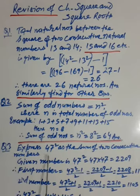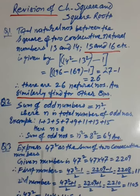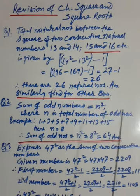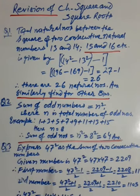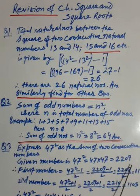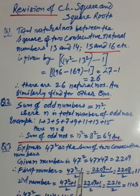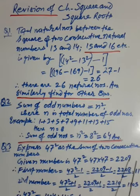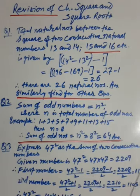Third question: express 47² as the sum of 2 consecutive numbers. This means 47² can be written as the sum of two consecutive numbers, like 102 plus 103, or 506 plus 507. The method is: given number is 47. First, find 47² = 2209. Then the first number is given by (n² - 1) / 2, where n is 47. That is (2209 - 1) / 2 = 2208 / 2 = 1104.